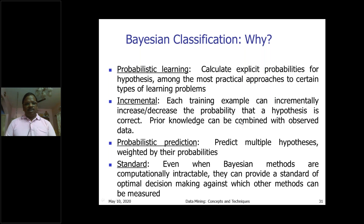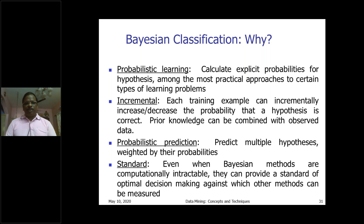In incremental learning, each training example can incrementally increase or decrease the probability that a hypothesis is correct. If your hypothesis — your condition — is correct, then only the information is carried out by the Bayesian classifier. You have to perfectly fit your hypothesis and organize your data and reports accordingly. This is incremental learning.